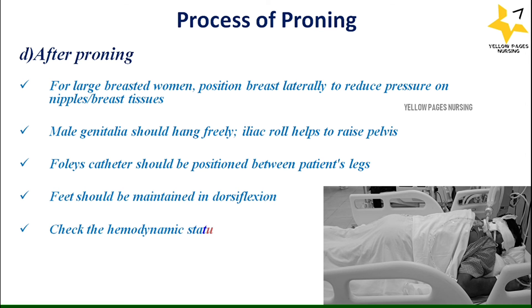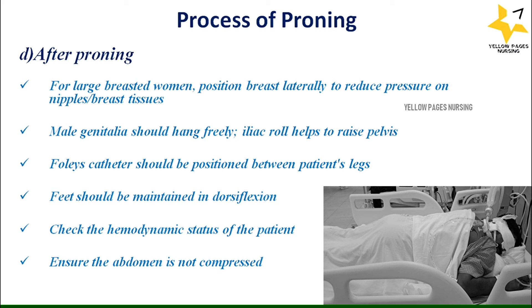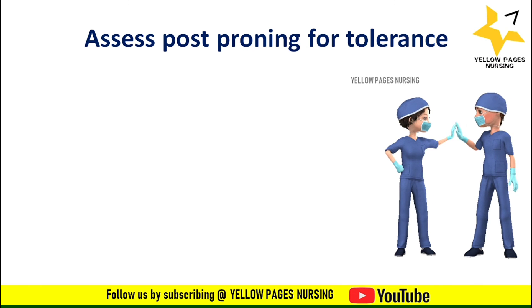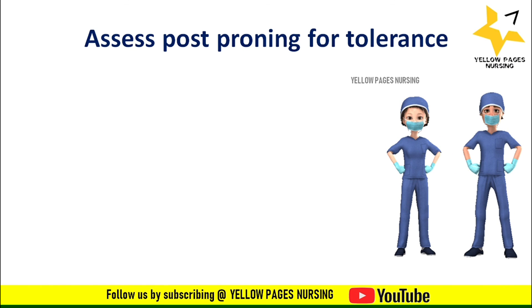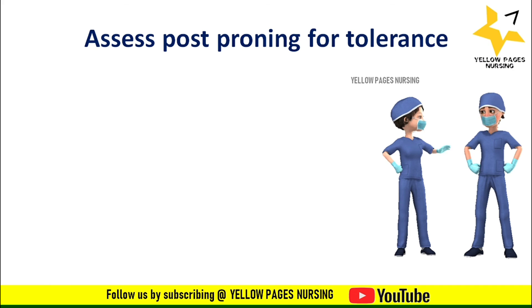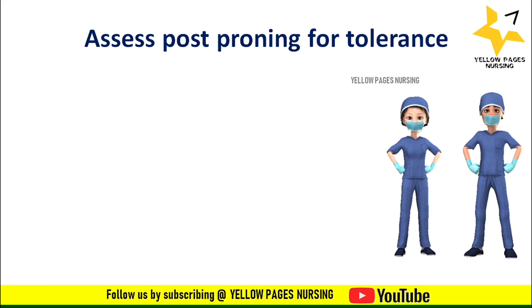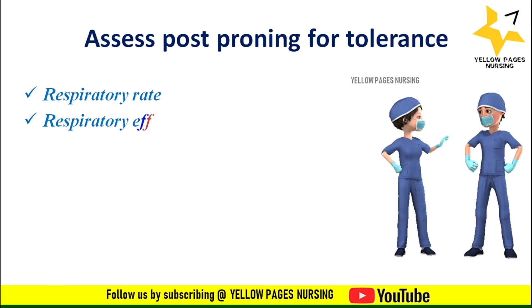Male genitalia should hang freely. The iliac roll helps to raise the pelvis. Foley's catheter should be positioned between the patient's legs. Feet should be maintained in dorsiflexion. Check the hemodynamic status of the patient. Ensure the abdomen is not compressed — the pillows under the chest and pelvis prevent this, confirmed by inserting an arm that should go in and come back freely. Perform post-proning ABG sampling and check all lines and drains for proper position and connection.